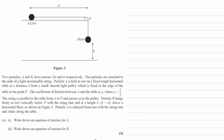Two particles A and B have masses of 2m and m respectively. The particles are attached to the ends of a light and inextensible string. Particle A is held at rest on a fixed, rough, horizontal table — so there is friction — at a distance of d from the small, smooth, light pulley fixed at the edge of the table at point P. The coefficient of friction between A and the table is μ, where μ is less than a half. The string is parallel to the table from A to P and passes over the pulley. Particle B hangs freely at rest, vertically below P, with the string taut and at a height of H, where H is less than D, above a horizontal floor as shown in figure 3.